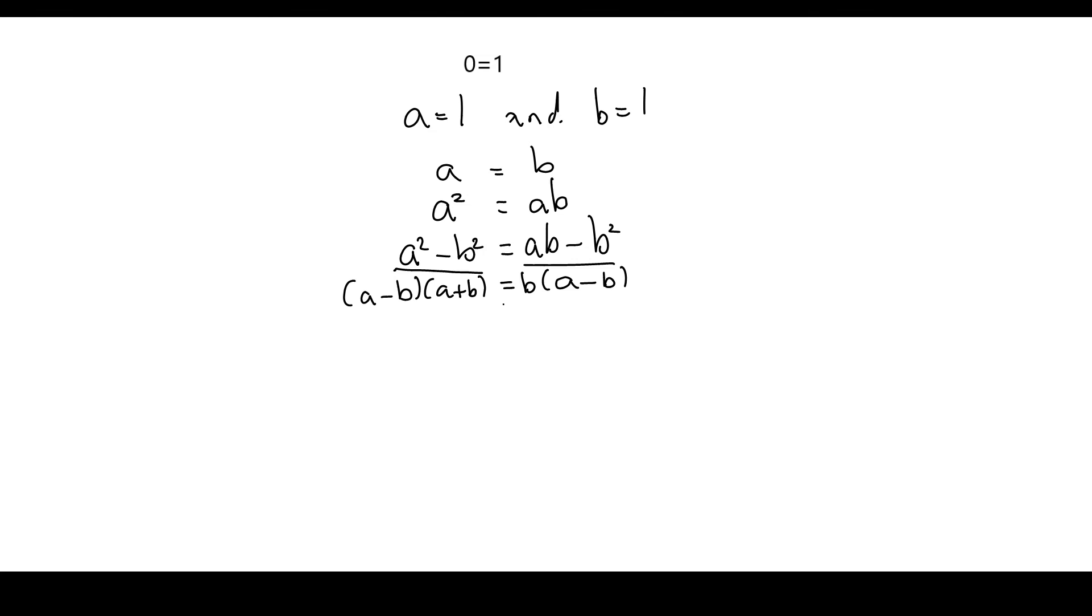Both sides are being multiplied by A minus B so I'm going to divide by A minus B and I'm left with A plus B equals B.